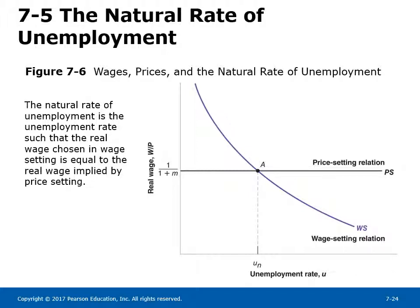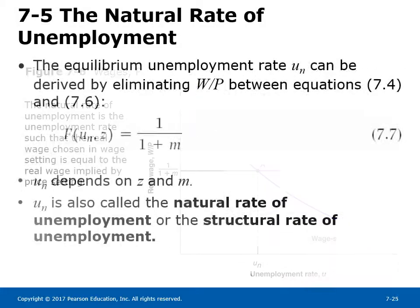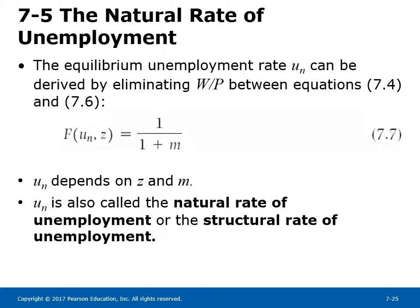The wage-setting relation is negatively sloped when real wage is plotted against the unemployment rate — the higher the unemployment rate, the lower the real wage. The price-setting relation plots as a horizontal curve because the real wage implied by price setting does not depend on the unemployment rate; it depends on the markup. The natural rate of unemployment is given by the point where the two curves intersect, showing equilibrium in the labor market where the real wage chosen by wage setters equals the real wage implied by price setting. Equation 7.7 shows that the natural rate UN depends on Z and M, and is also called the structural rate of unemployment.